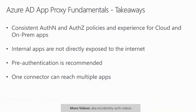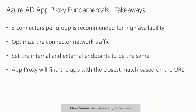Here are the takeaways. With Azure AD, you have a consistent set of tools such as conditional access — you can manage on-prem and cloud applications the same way when you use pre-authentication, giving consistent authorization and authentication policies for your users. Internal apps are not directly exposed to the internet; the connectors on-prem start outbound communication to the cloud services to receive and process those requests. Azure AD App Proxy pre-authentication should be used whenever possible for security and to filter the load to your on-prem app. One connector can reach multiple applications, and it's a good idea to deploy multiple connectors in a connector group for high availability. We recommend three connectors per connector group for load balancing, redundancy, and machine serviceability. Optimize network traffic between the connectors and the applications and between the connector and cloud services. Set the internal and external endpoints to be the same to have the best experience. And lastly, App Proxy will find the app with the closest match based on the URL, which allows for granular management.